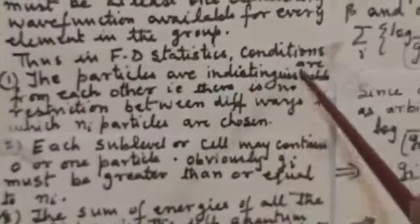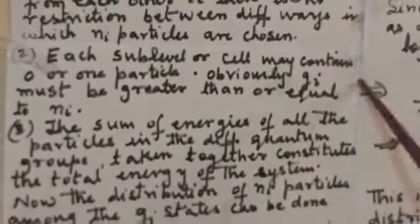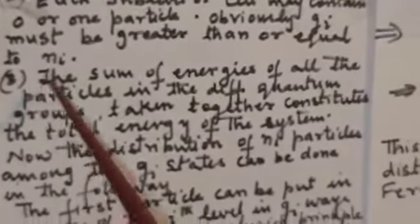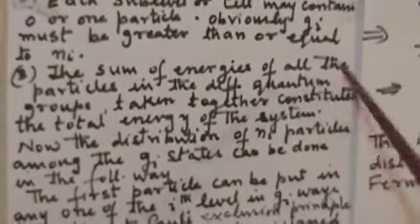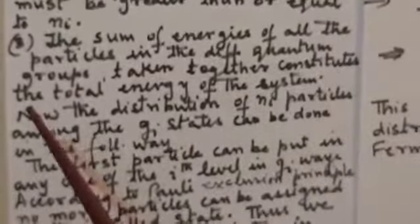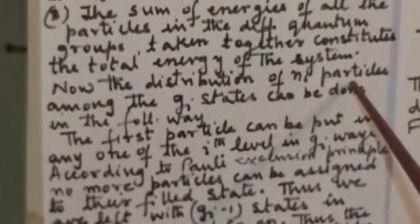Thus in Fermi Dirac statistics, conditions: First, the particles are indistinguishable from each other, that is there is no distinction between different ways in which NI particles are chosen. Second, each sub-level of cell may contain one or zero particle. Obviously GI must be greater than or equal to NI. Third condition, the sum of energies of all the particles in the different quantum groups taken together constitutes the total energy of the system.